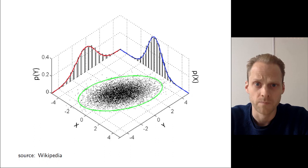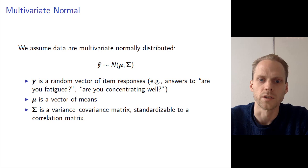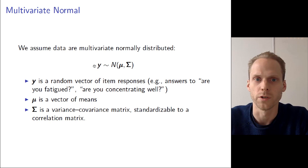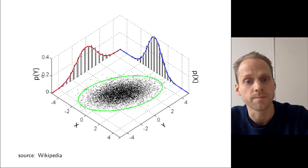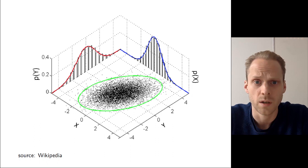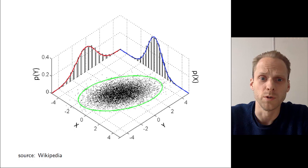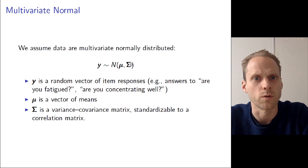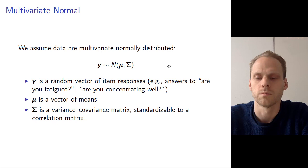Why do we assume multivariate normality? One main reason is that we are doing multivariate statistics and there are actually not that many distributions that allow you to form a multivariate distribution — many distributions are only for one variable, not for the joint combination. Also, the multivariate normal distribution is what's called the maximum entropy distribution, meaning it's the least specific distribution that gives rise to a certain set of means and variance-covariances. So it's the least specific distribution we can assume given our correlational structure, which is pretty nice.